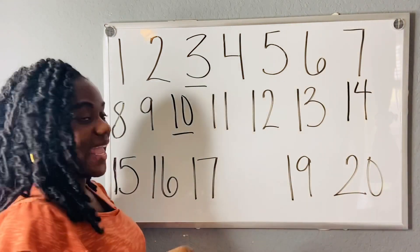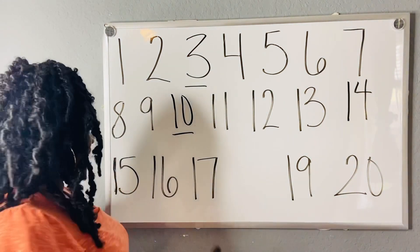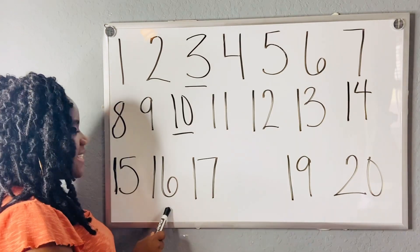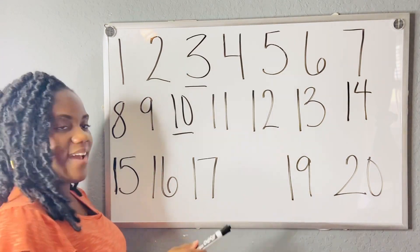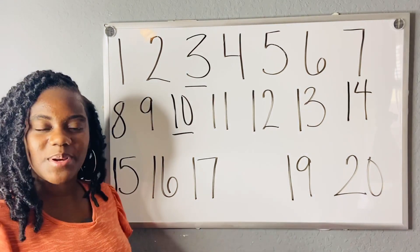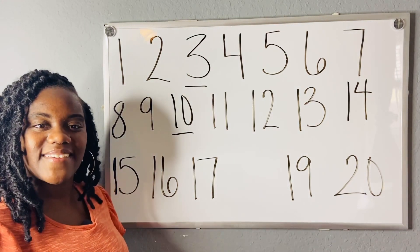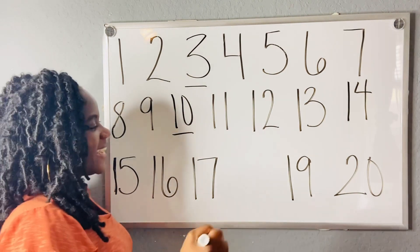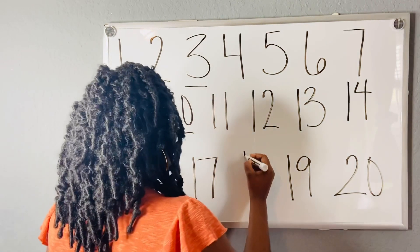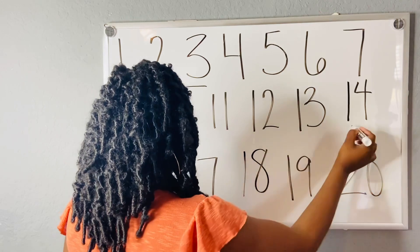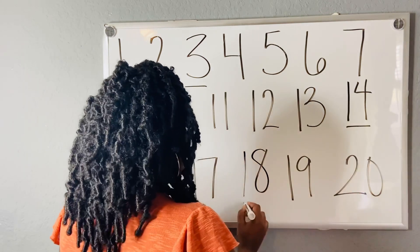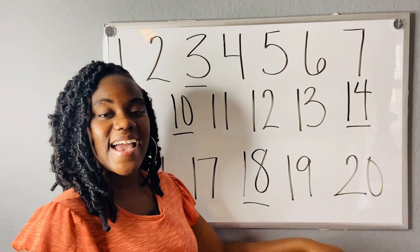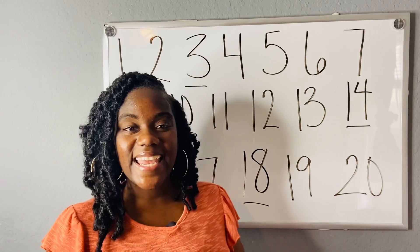Let's continue counting. 15, 16, 17. What number comes after 17? 18. 19, 20. We did it!